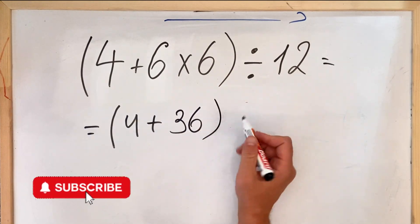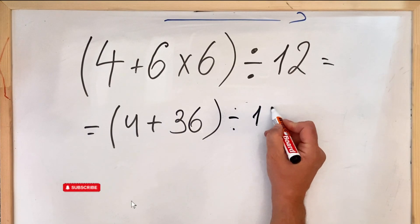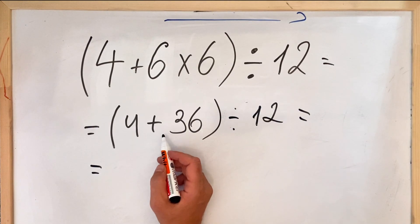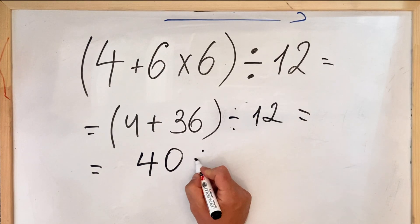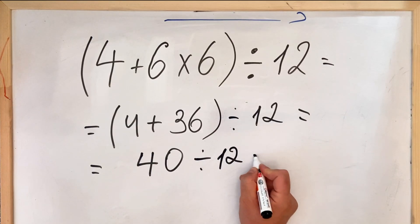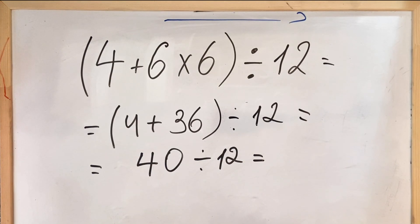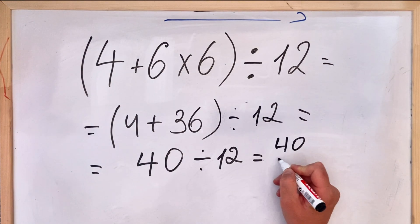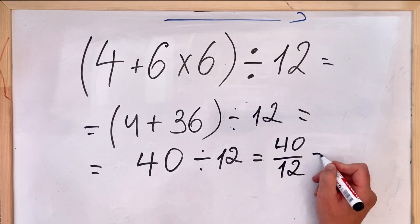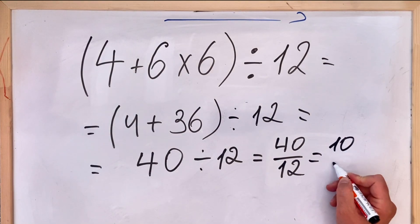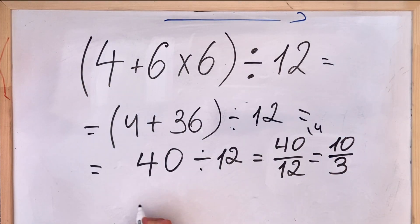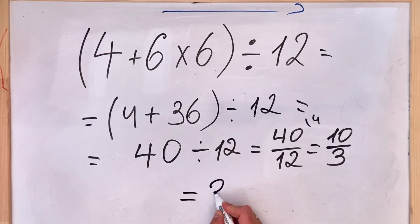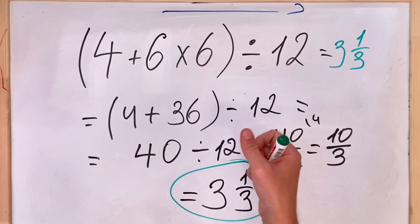4 plus 36 is 40 divided by 12 and of course it's not an even division here. We get 40 by 12 which equals to 10 by 3 because we simplify by 4, and the solution would be 3 and 1/3. This guys is the correct number.